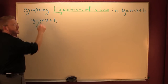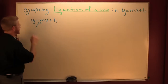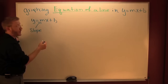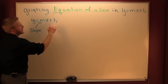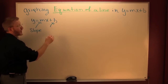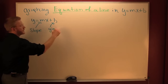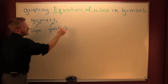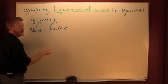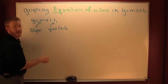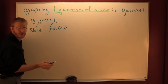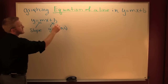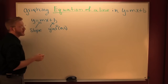What's m? That's the slope — it's your rise over your run. And b is the y-coordinate of your y-intercept. Some books tell you that the y-intercept is b. They're wrong. Your y-intercept is at (0, b).